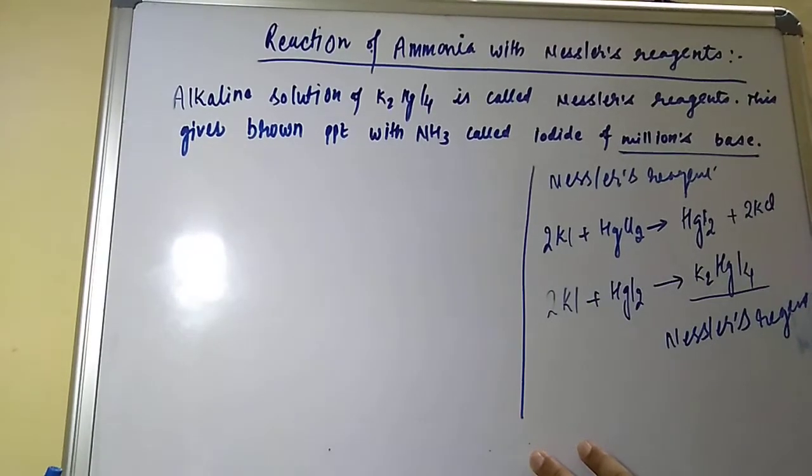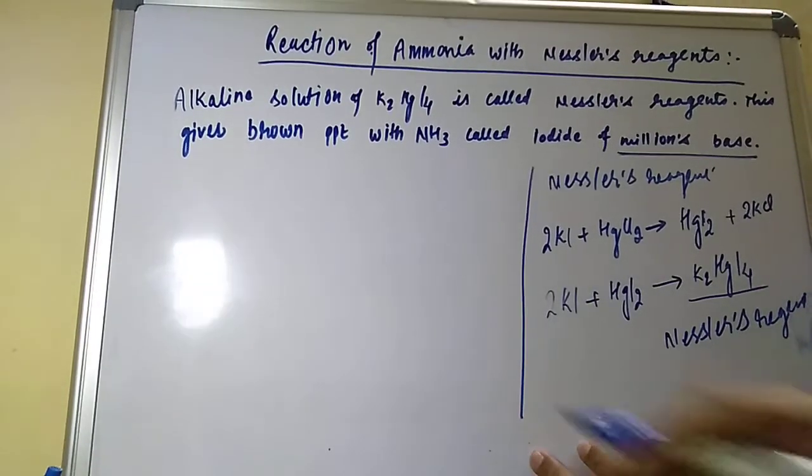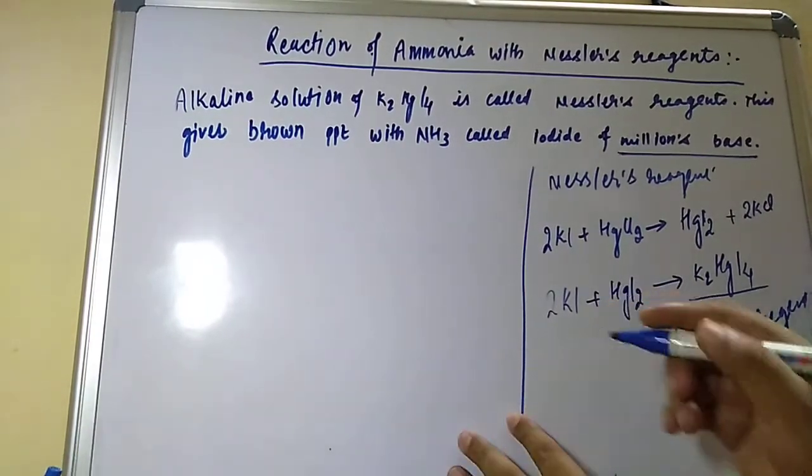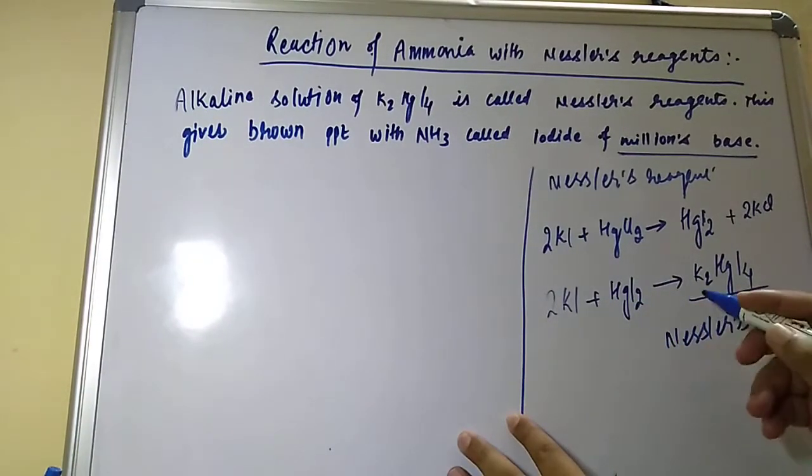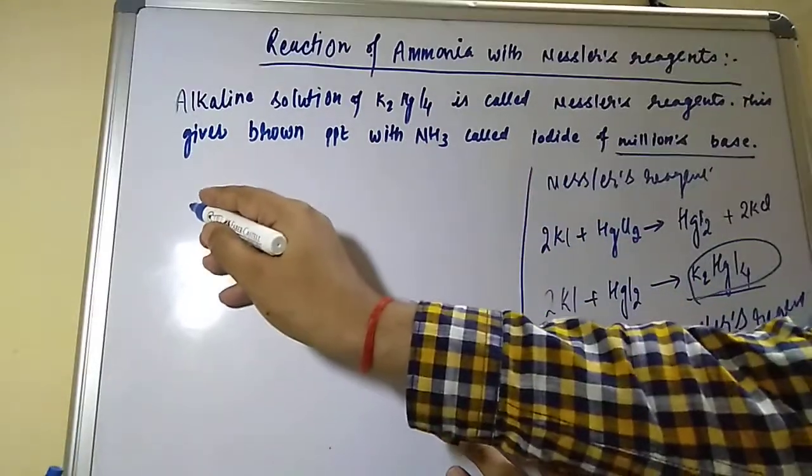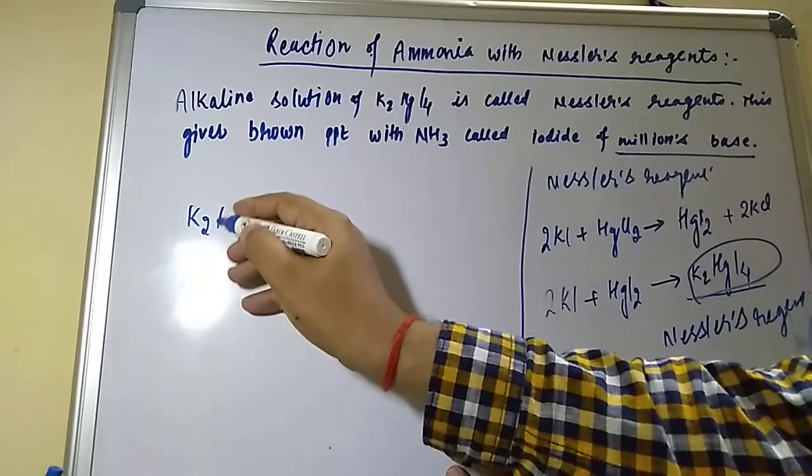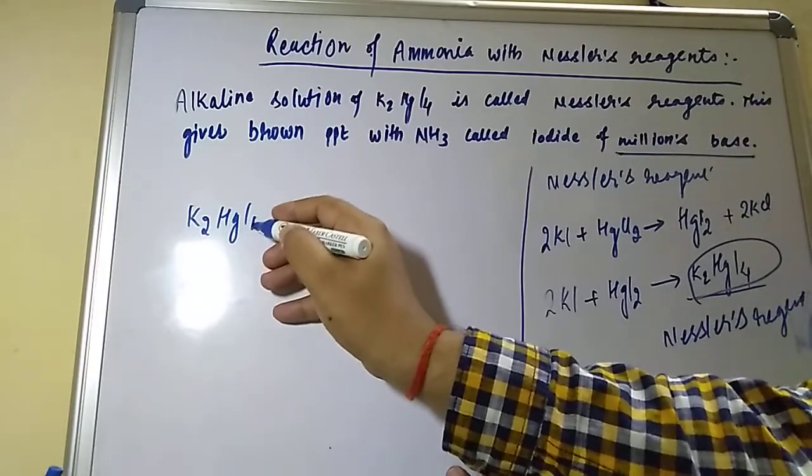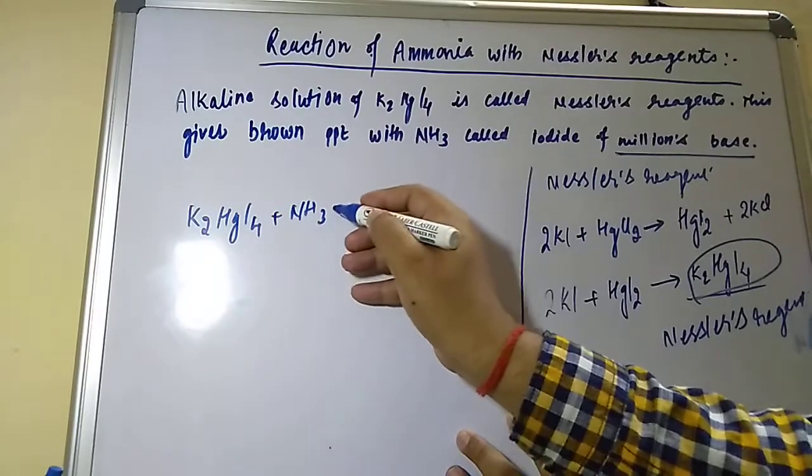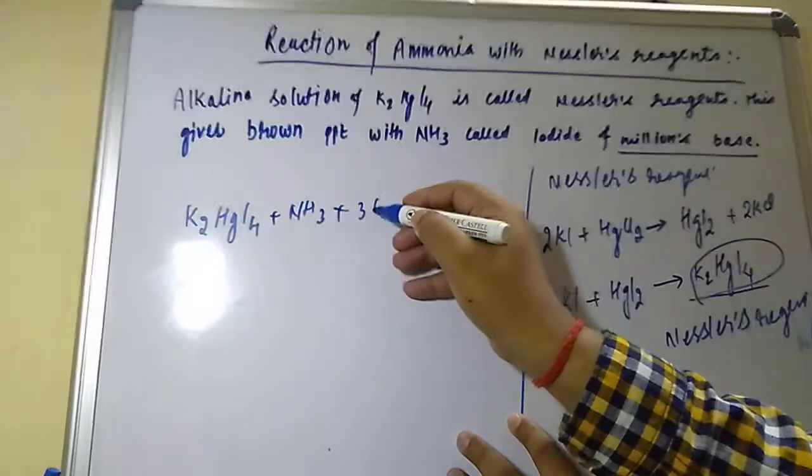Now let us write down the equation for this. Ammonia will react with this Nessler's reagent and it will give the Millon's base. Here the equation: K2HgI4 will react with ammonia NH3 in the presence of base, so 3 moles of NaOH.